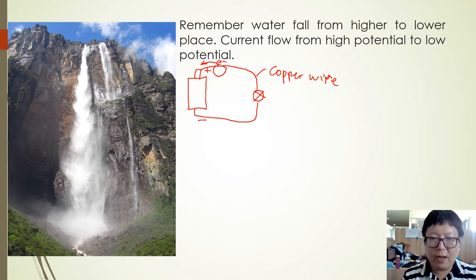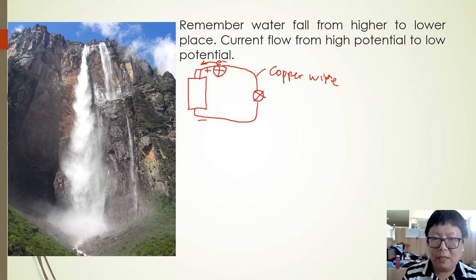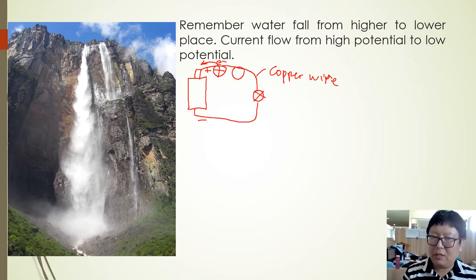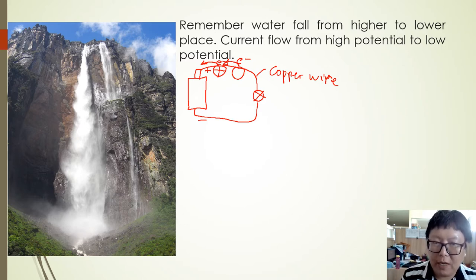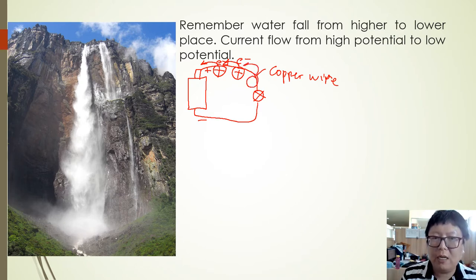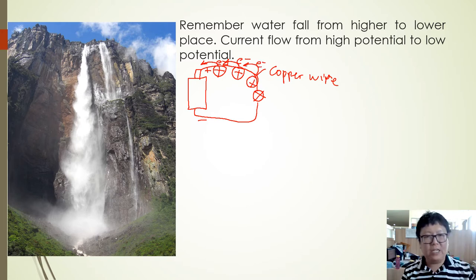The atom will become a positive ion. I'll zoom in. So the electrons will go here, then the atom will become a positive ion, and will attract the next atom again. So the electrons go there, and this one becomes positive.